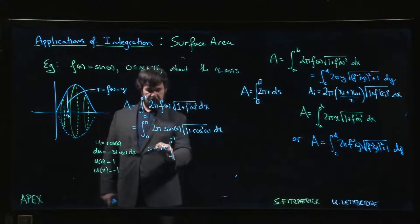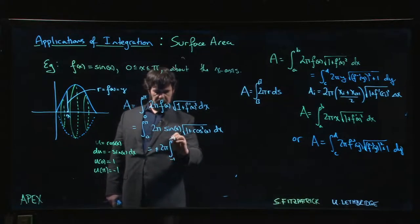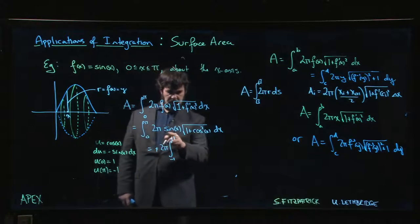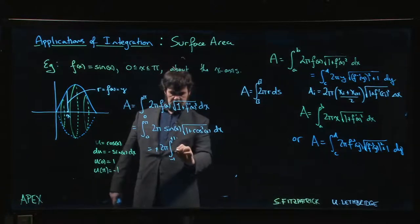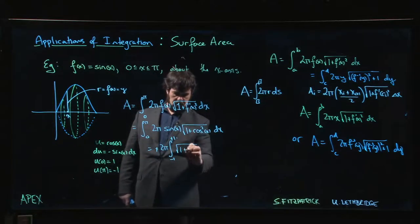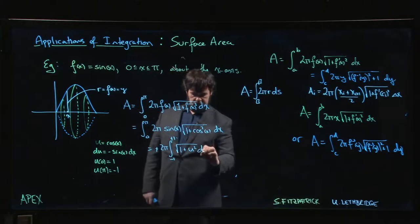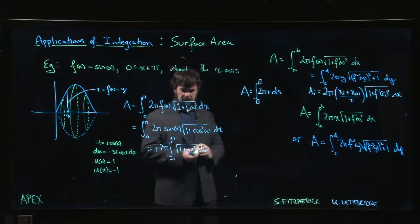Flipping the limits gets rid of this minus sign out front. So we can make that into a minus, make that into a plus. So the sine x dx becomes our du, and we get to the square root of 1 plus u squared. Integrate with respect to u.